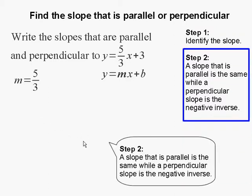Step 2, a slope that is parallel is the same. So the parallel slope is 5 over 3.